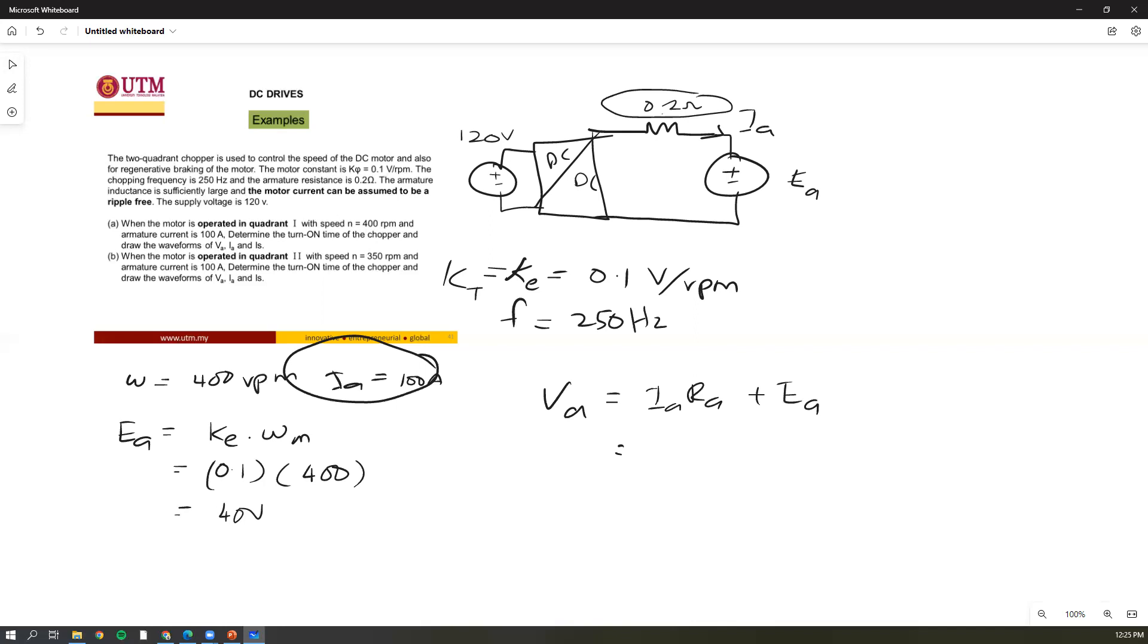This is 20 volts plus 40 volts, so your Va is 60 volts. We know that Va equals duty cycle multiplied with Vdc. So your D is Va over Vdc, which is 60 over 120, so 0.5.